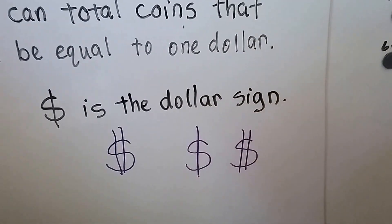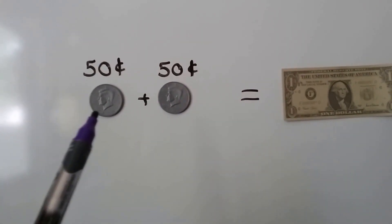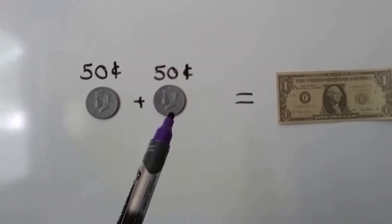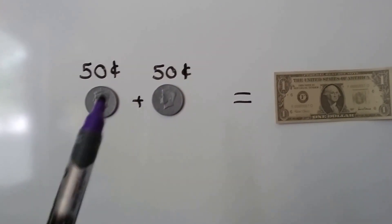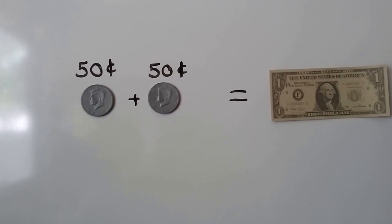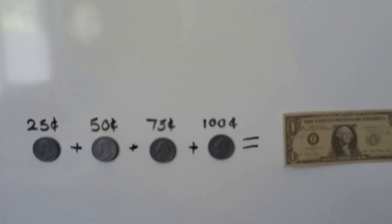Here we have a half dollar, that's 50 cents, and another half dollar, that's 50 cents. Two of them together equals a one dollar bill, equals 100 cents.